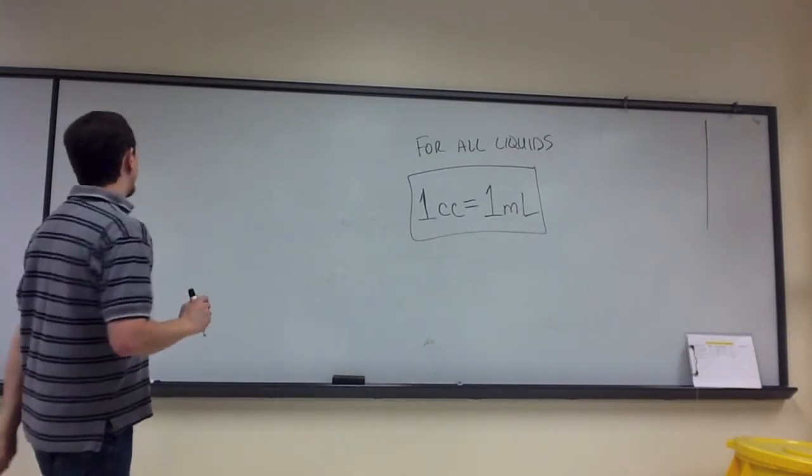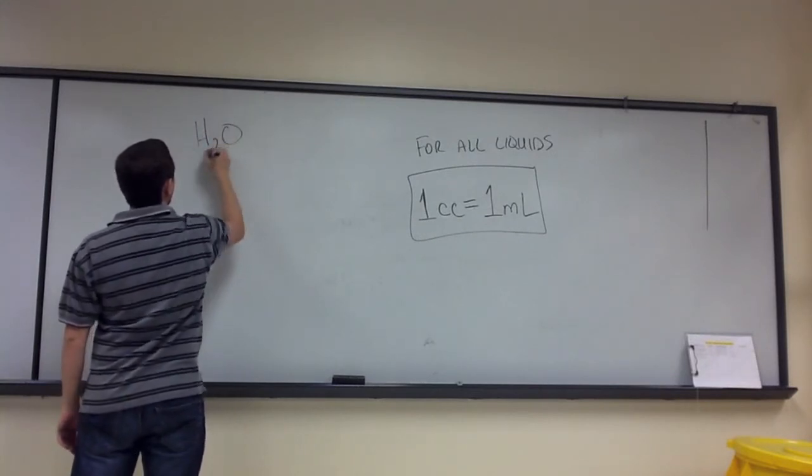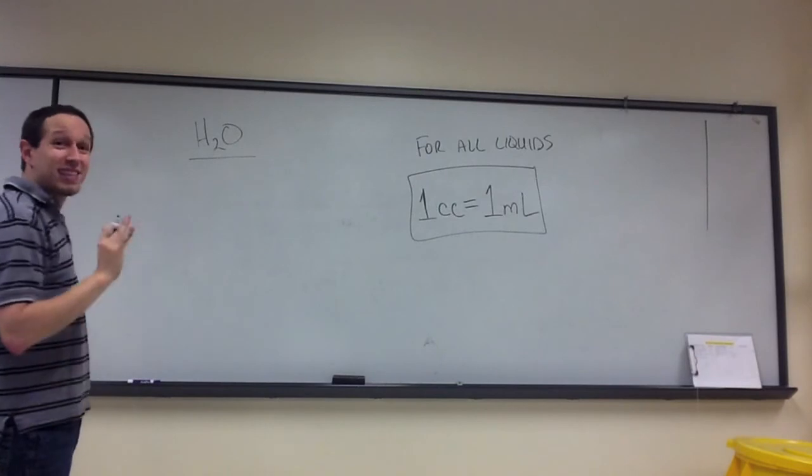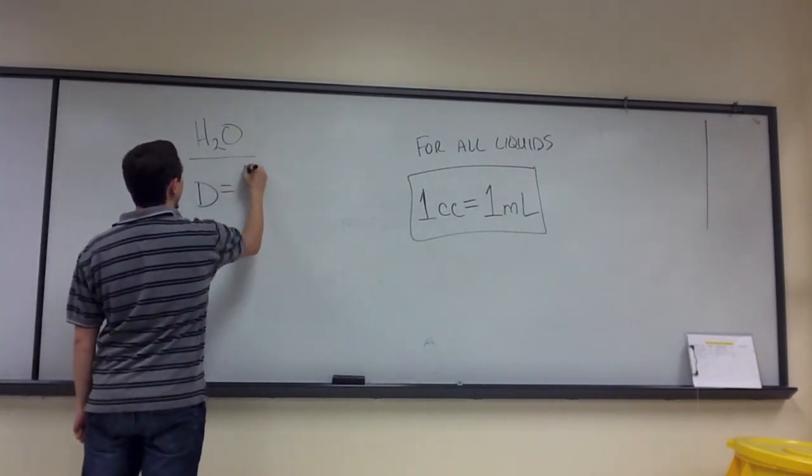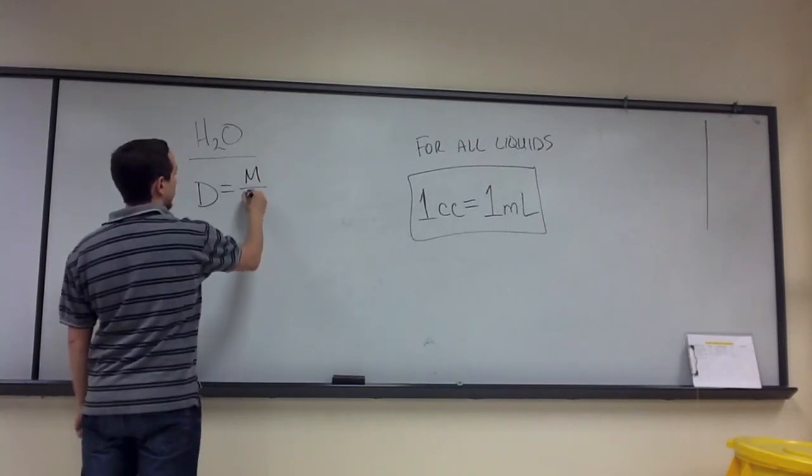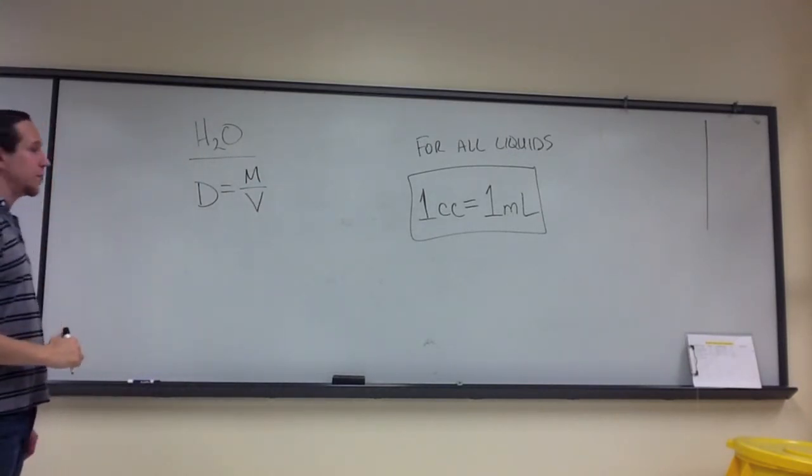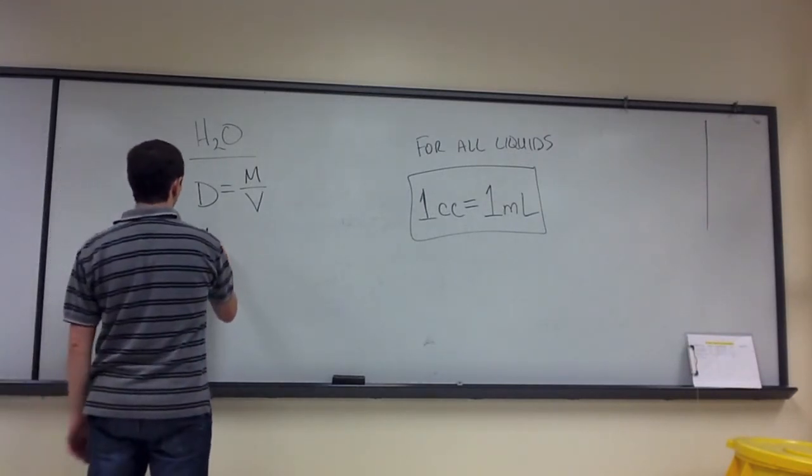Now, there's one other thing. Water is a very unique liquid, and that has a density equal to one. Density is equal to the mass divided by the volume. So the mass of a substance divided by its volume gives you the density. Water's density is one.